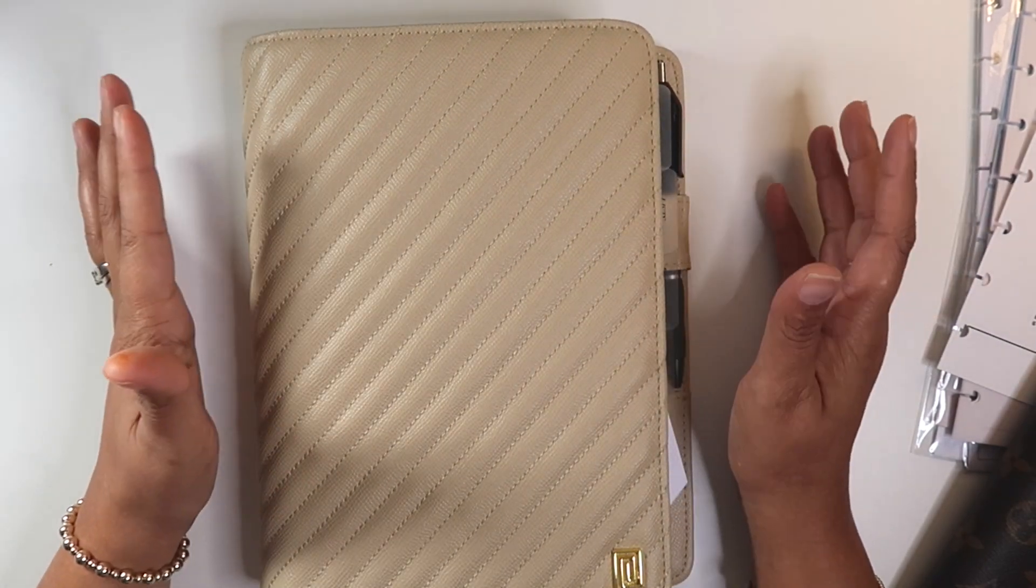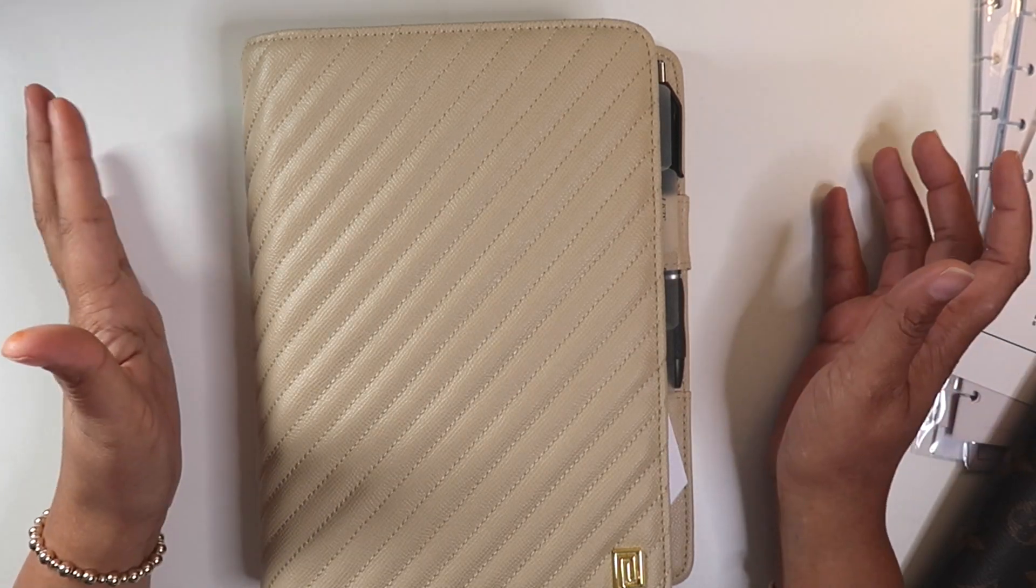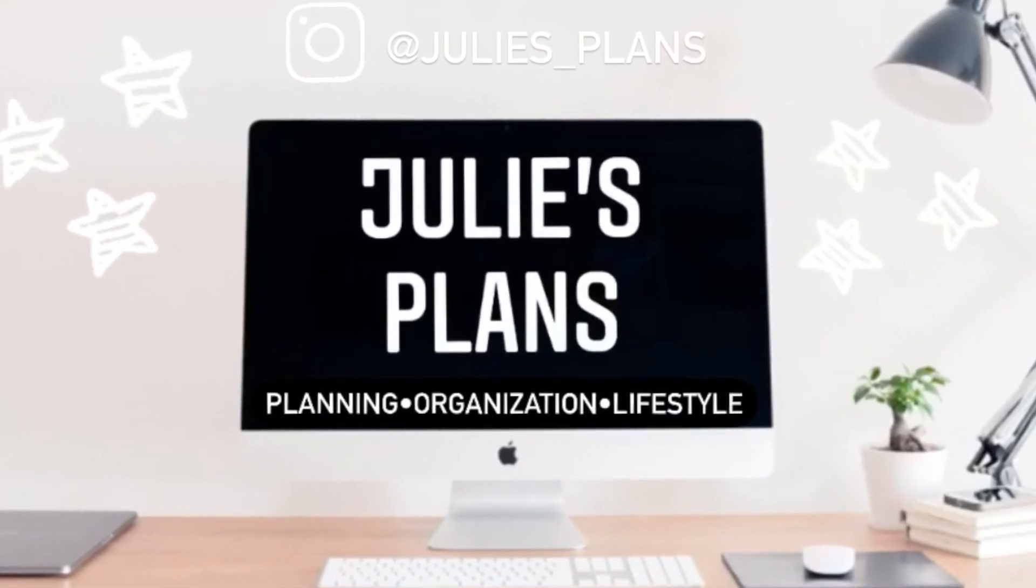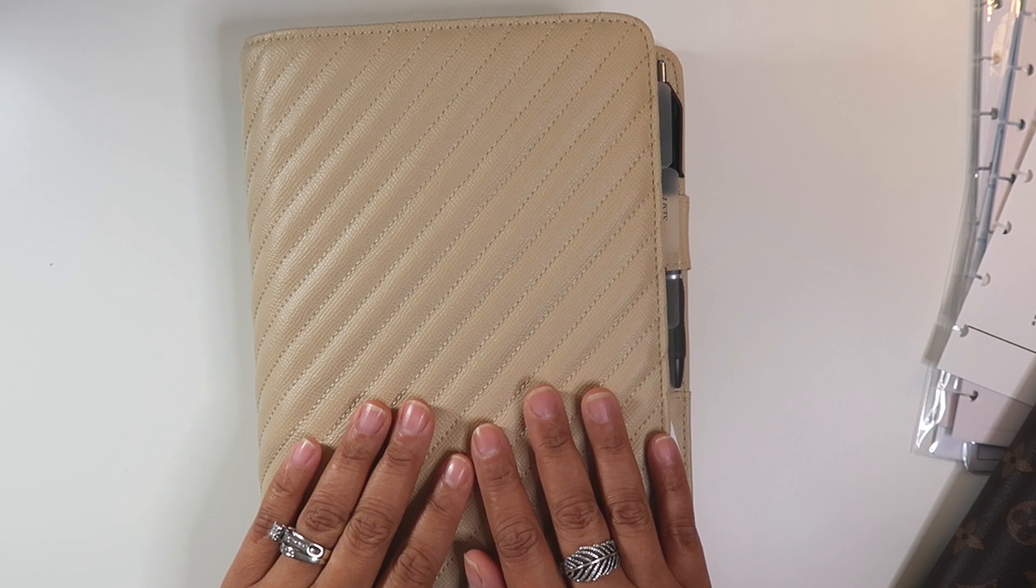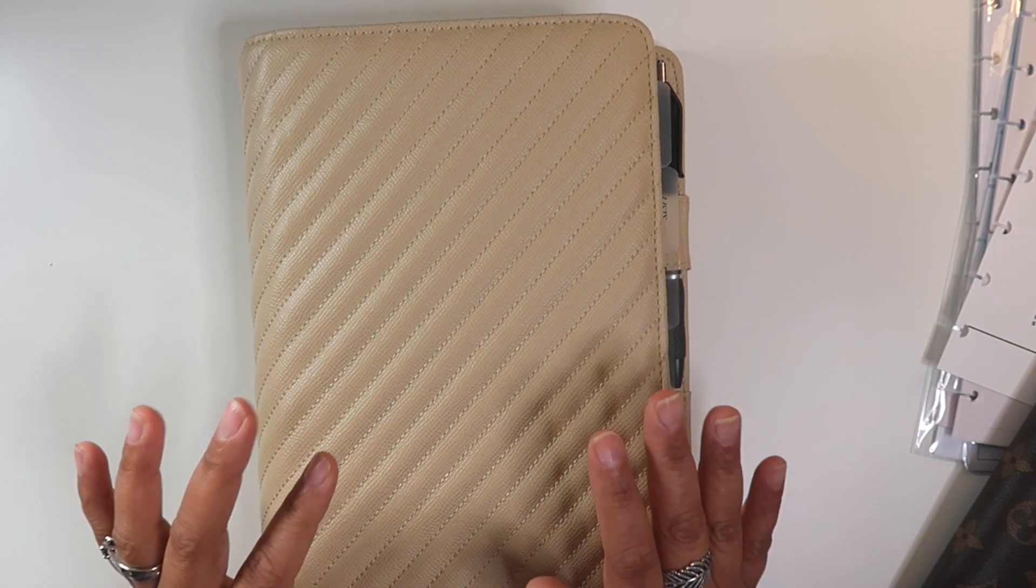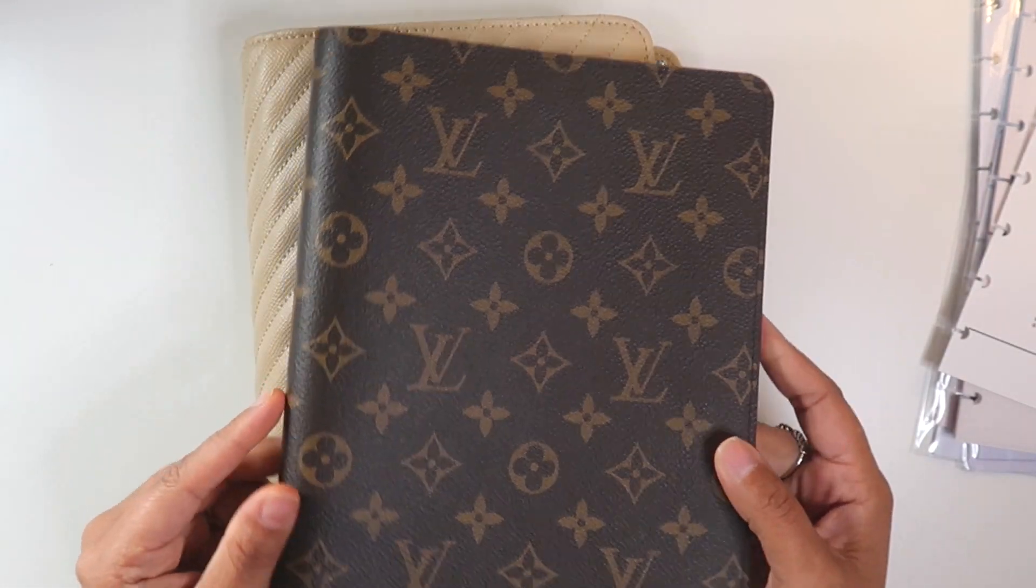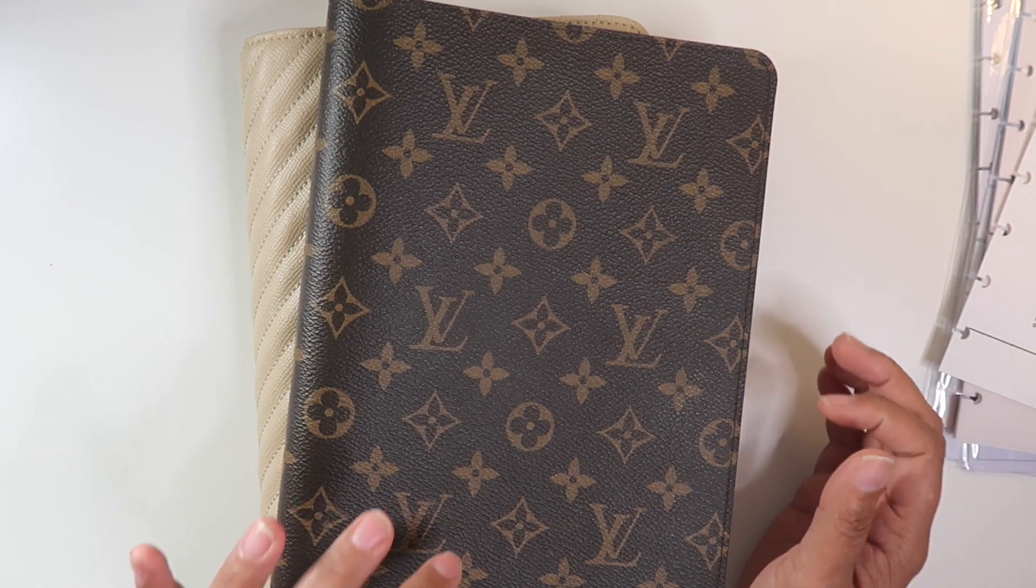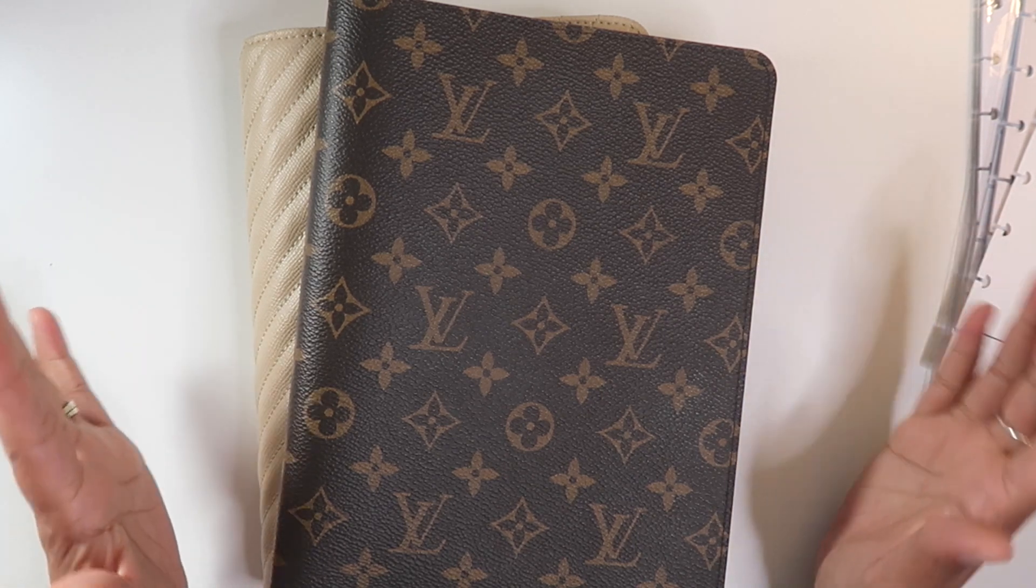Hey everyone, welcome back. I am here today with an updated setup of my disc-bound planner. Now I am currently using this beautiful Nautique Agenda cover in the color Bisque. This actually just arrived a couple of days ago, but I also got this puppy in the mail. It is the Louis Vuitton Desk Agenda and it is perfect for the disc-bound system and for me wanting to go down a little bit smaller in my disc size.